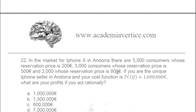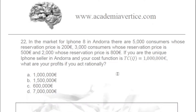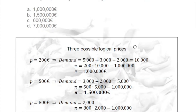What I'm doing here is first degree price discrimination — to each of these customers, it's like practicing first degree discrimination on a small scale. Three possible logical prices: if I charge 200, all of them will buy — 5,000 plus 3,000 plus 2,000, so 10,000 consumers will buy the iPhone.